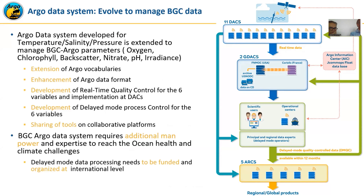The Argo data system developed for pressure, temperature, and salinity has been extended to manage BGC parameters: oxygen, chlorophyll, backscatter, nitrite, pH, and irradiance. The Argo vocabulary and data format have been enhanced to manage BGC variables. Real-time QC procedures have been developed for the six variables and implemented in the 11 DACs. The delay mode quality control procedure for the six variables is still under development but progressing well. The sharing of tools is made on collaborative platforms so that wherever data are processed, they are processed in a consistent manner.